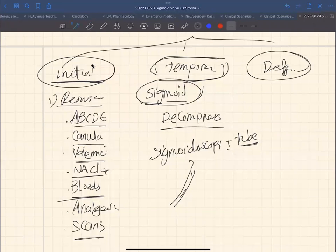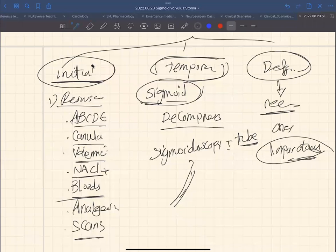Definitive management. Sometimes, if this is recurrent condition, you need to fix one side of the bowel to the abdominal wall. And this is basically you do laparotomy. So these are basically sigmoid volvulus, one of the interesting cases that I've seen today, and I just wanted to share with you. Thank you very much.